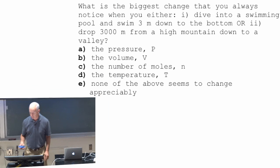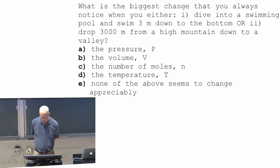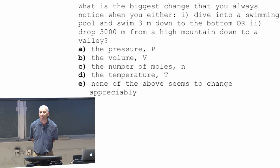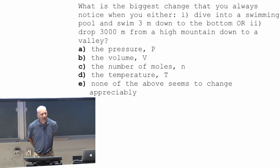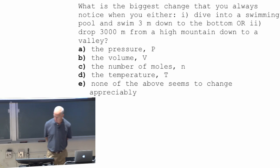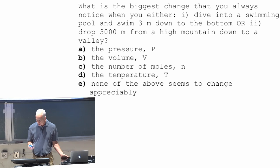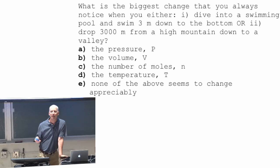So this is a question for you. Suppose you dive into a swimming pool and swim three meters down, so ten feet down. Or you drop 3,000 meters from a high mountain down into a valley, so ten thousand feet. Hopefully you do that with a parachute, but anyway. What changes? If I just pick something like PV equals nRT, I pick a bunch of things. What's the physical thing that changes when you do something like that? What do you notice?